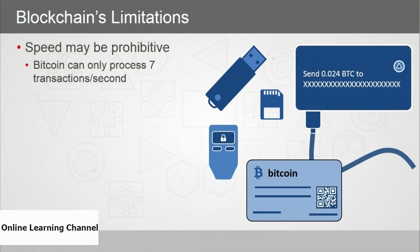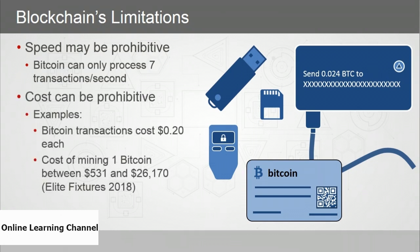Speed may be slow, depending on how consensus is reached and how many nodes there are. Bitcoin, for example, can only process 7 transactions per second. And the cost can be prohibitive — Bitcoin transactions cost 20 cents each, and as of 2018, the estimated cost of mining one Bitcoin ranges from 530 US dollars to 26,000 dollars, depending on which country you live in.